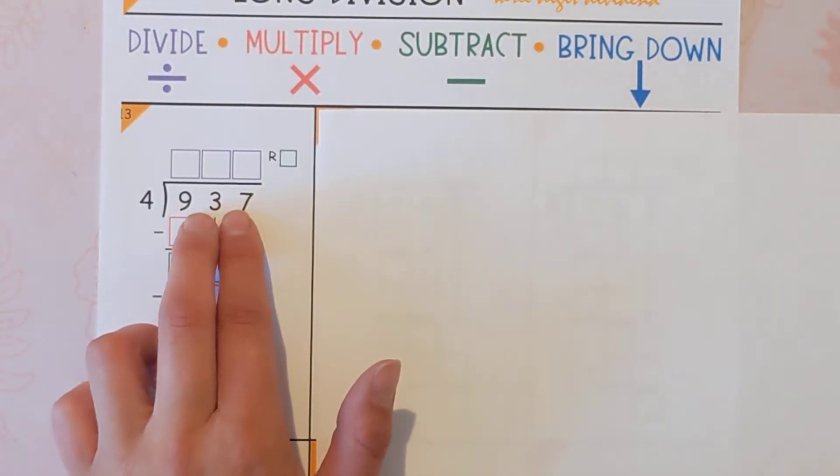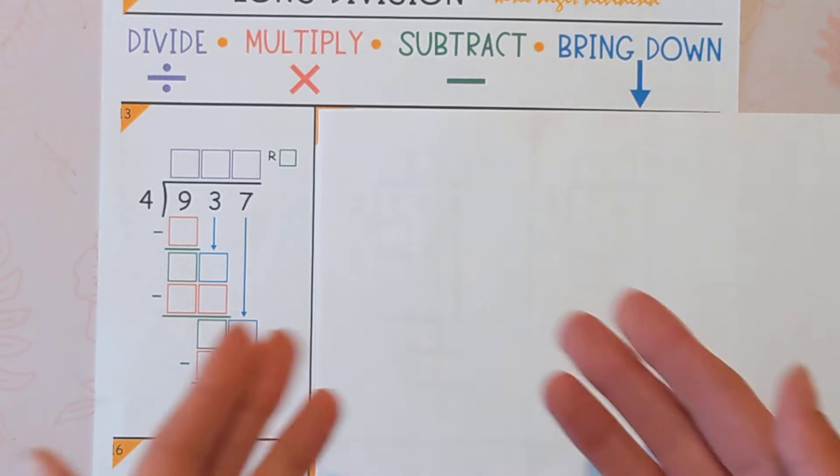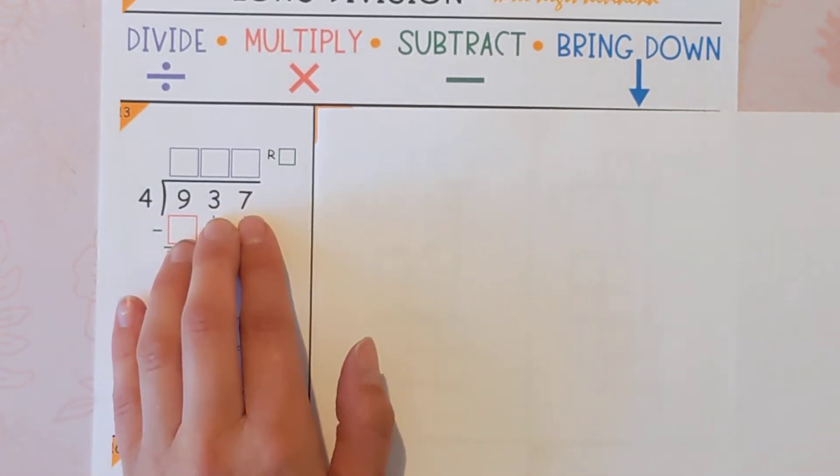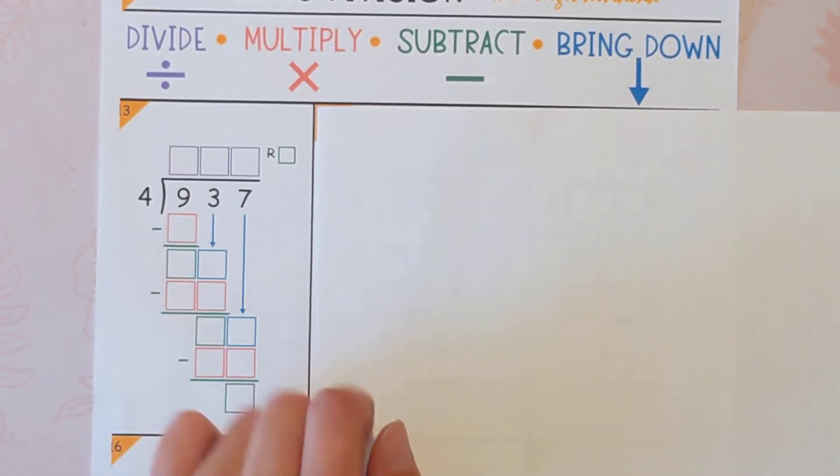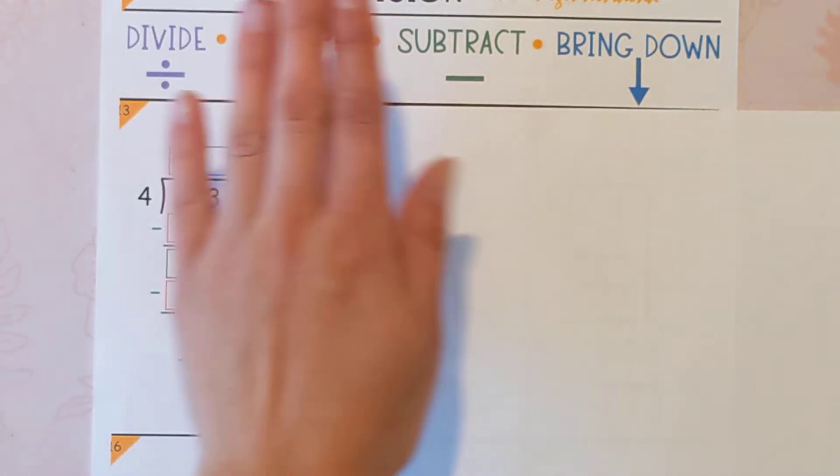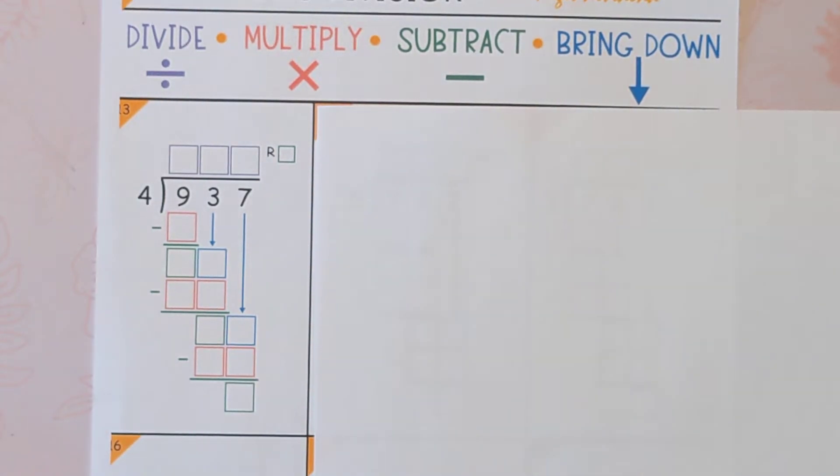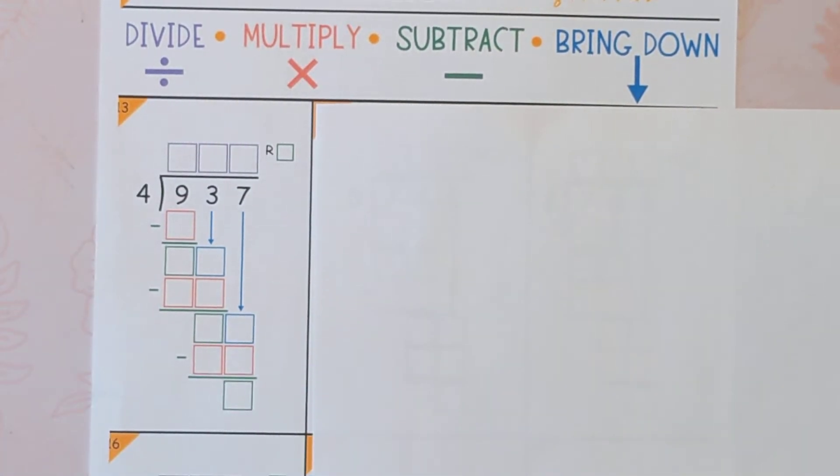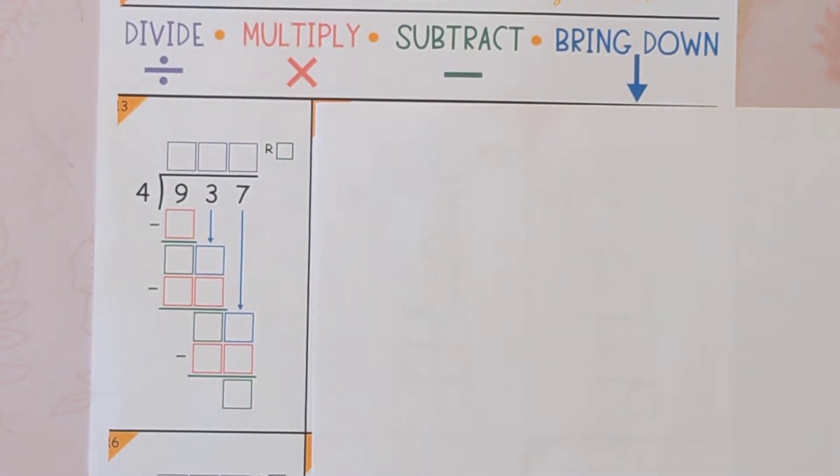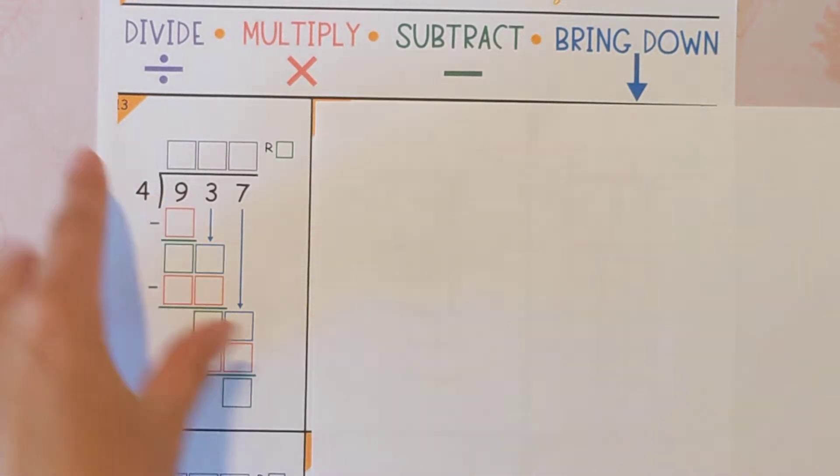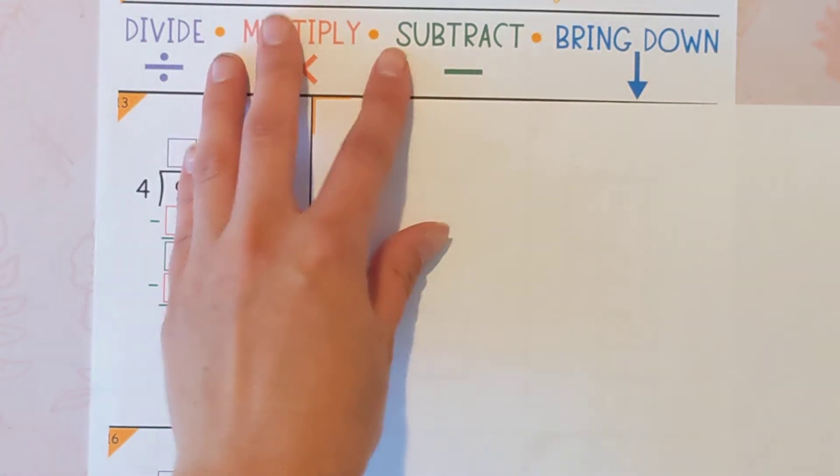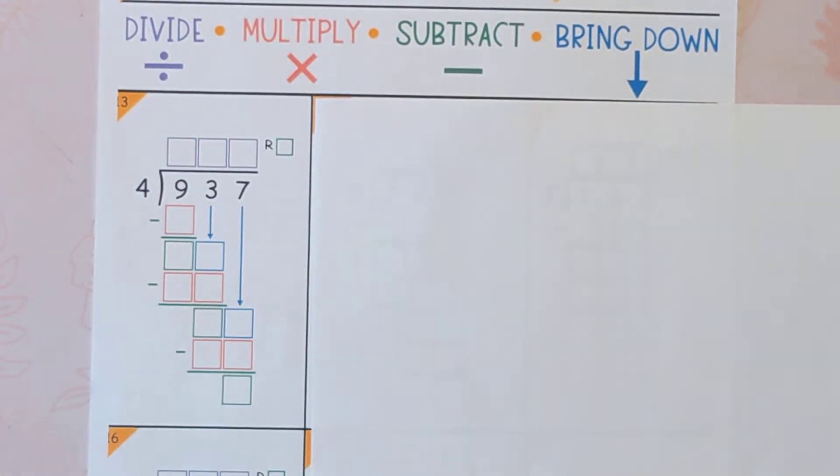And this here is called the dividend. It's the number that's getting divided up, and this is the divisor. So if we had, let's say we had 937 dog treats, and I was putting them into 4 piles, that would be a lot of treats. This is the number of piles, or like if I had 937 toys and I was splitting them between 4 friends, that's the 4. It's the equal groups that we're making, and then this is the big number that's getting split up.